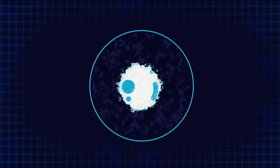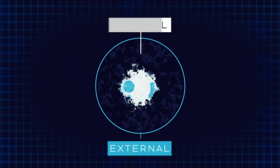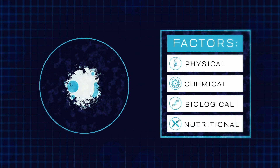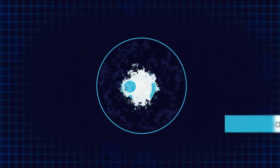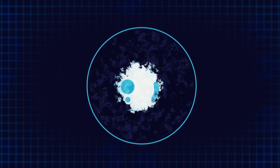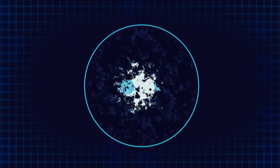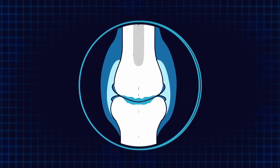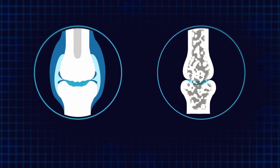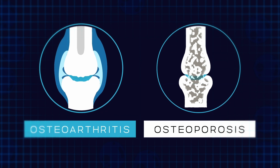Cells may become damaged through changes to their internal or external environments, and this happens due to physical, chemical, biological, or even nutritional factors. If cells are not able to perform their proper function, this can lead to disturbances and malfunctions in important cellular processes, which can cause these cells to die. This is how degenerative musculoskeletal diseases such as osteoarthritis and osteoporosis can occur.